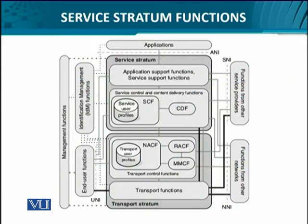The end user functions are controlled by the service control function. The service stratum has two parts: the application support functions and the service support functions. The service support functions, in turn, utilize the service control and content delivery system. The service control and content delivery functions implement all the necessary functionality that the user needs to execute that particular service.